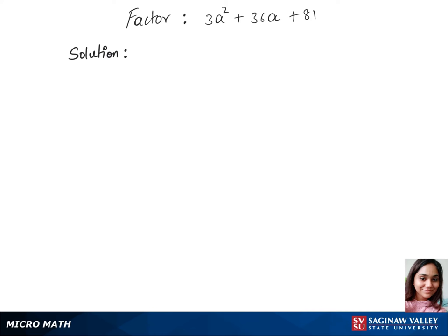Let's factorize this trinomial. Before that, we'll first common out 3 from this. So that's 3 times a squared plus 12a, since 12 times 3 is 36.